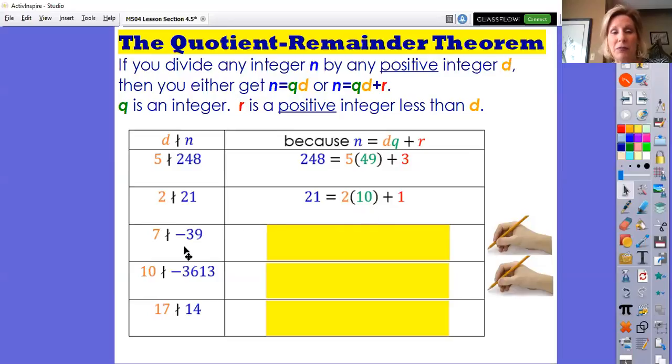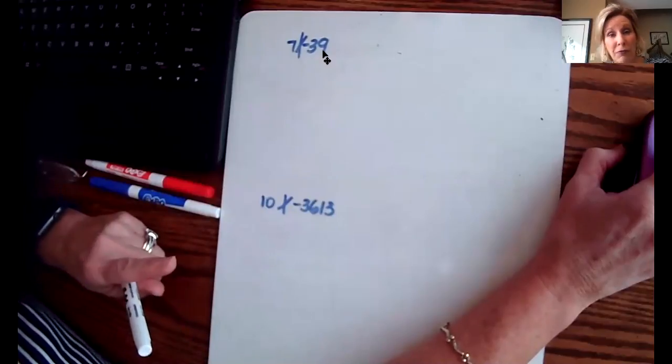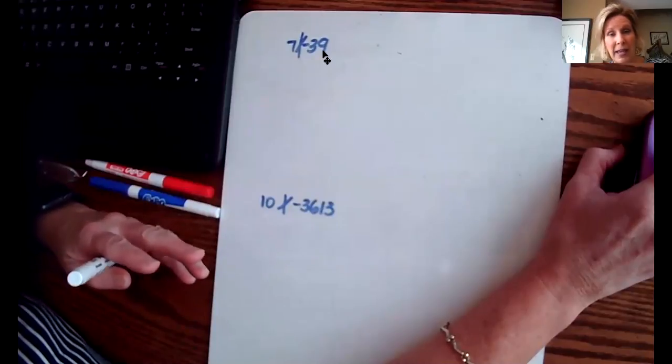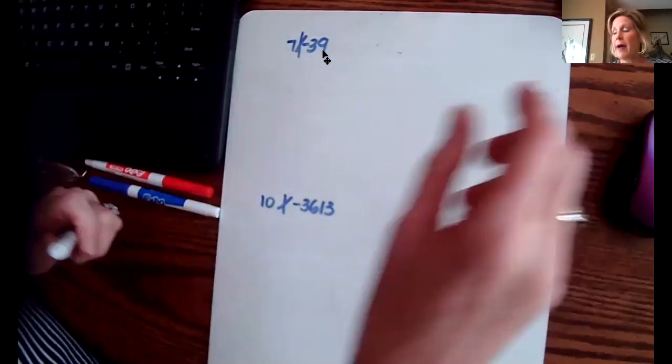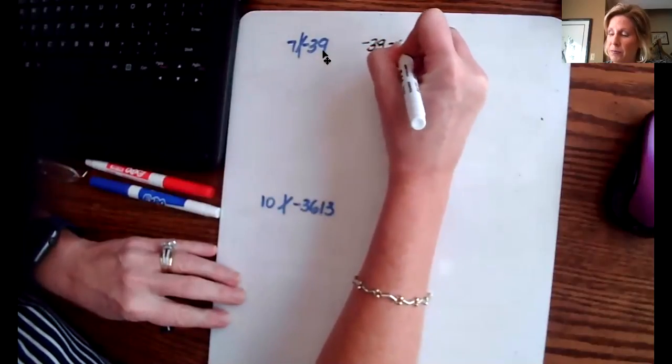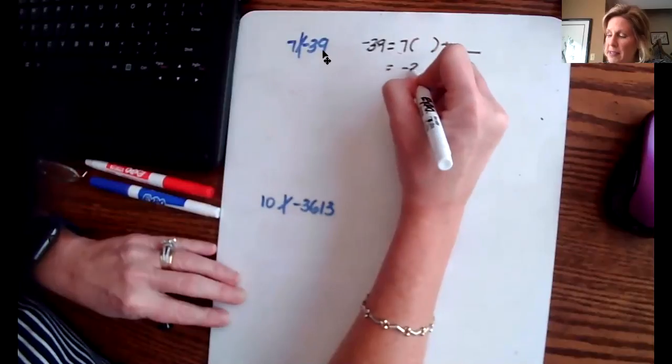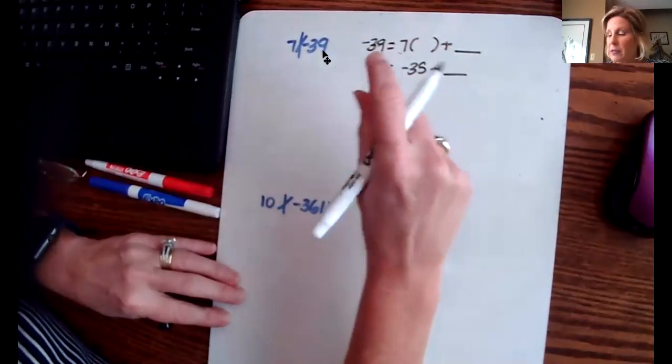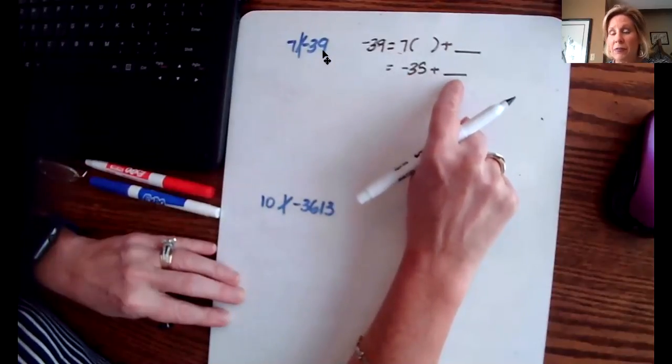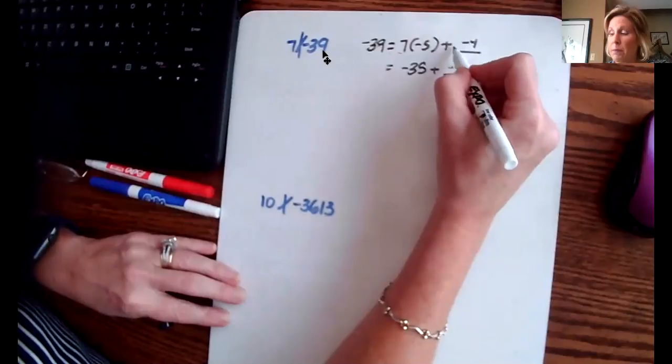Now does 7 divide -39? Wow, these get a little trickier when you're dividing into a negative. Let's do scratch work. Now 7 does not divide -39. You know that because 7 goes into 35 and 42, meaning it goes into -35 and -42. So we don't have that 39 is a multiple of 7. So when we write this, a lot of people's first reaction is to think about 35 and say, 'Let's make this -35 plus.' The problem is if I say -35 to get -39, I have to add -4. But the remainder must be positive.